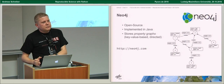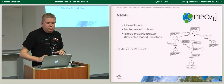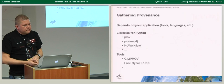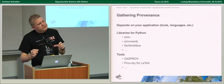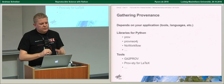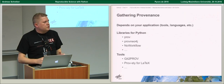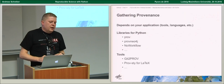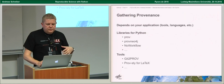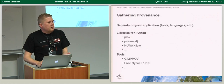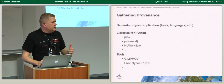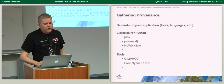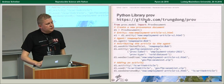Now let's move to Python. How to gather provenance information from an application depends on the application, the tools, and the programming language you're using. For Python, there exist a couple of libraries that support this. One example is the Python prov library from the University of Southampton.